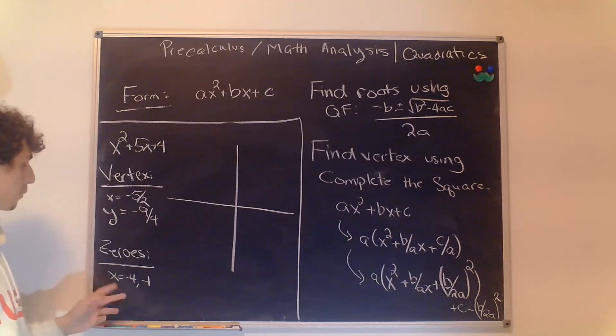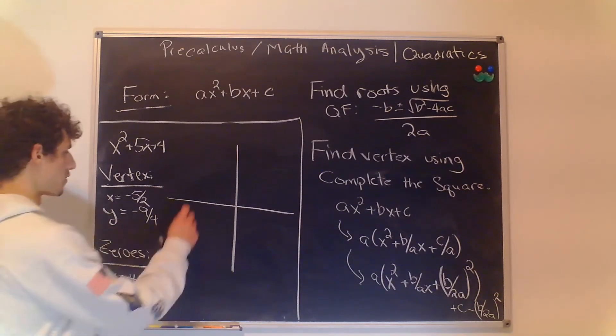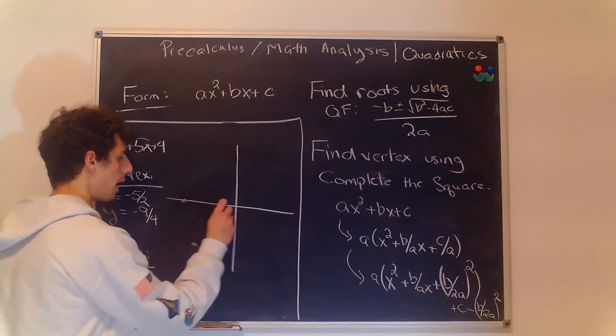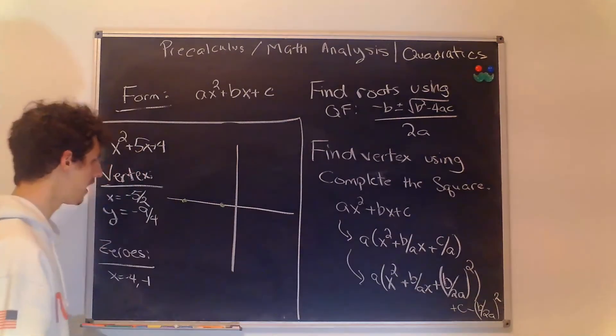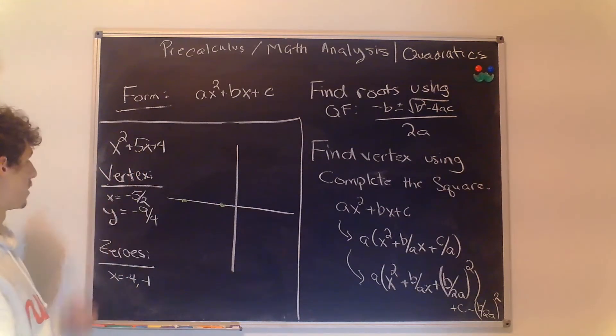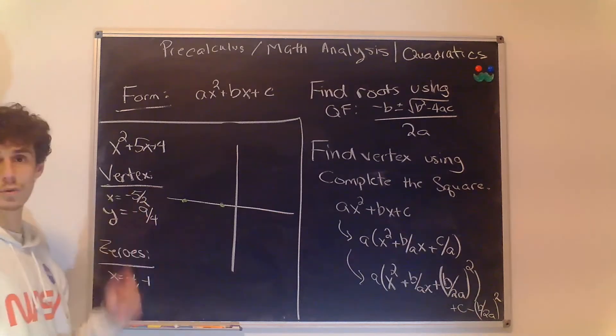So let's go ahead and fill in these zeros first. That's going to be -4 and -1 right there and we'll go ahead and fill in the vertex as well.